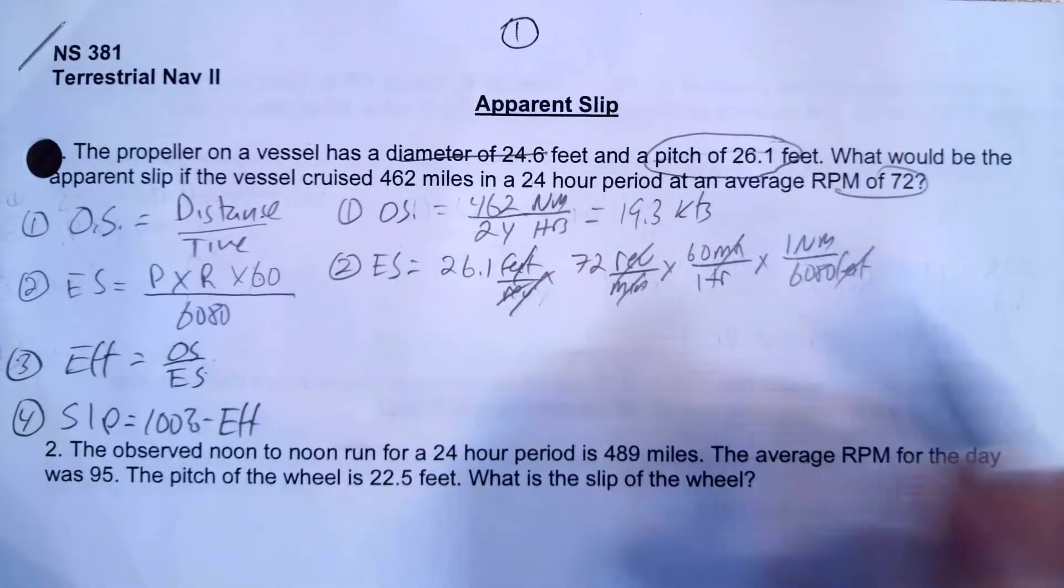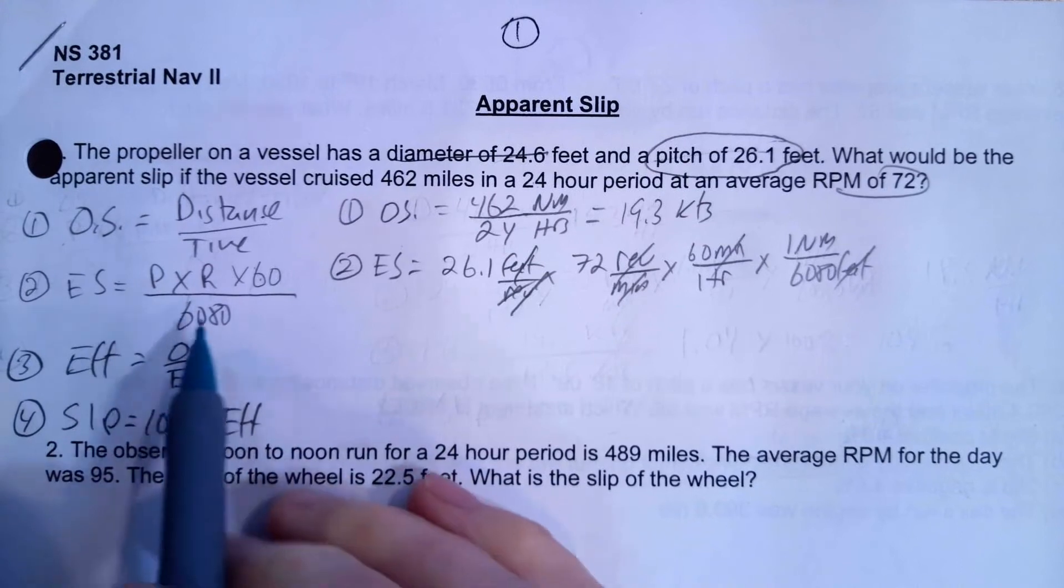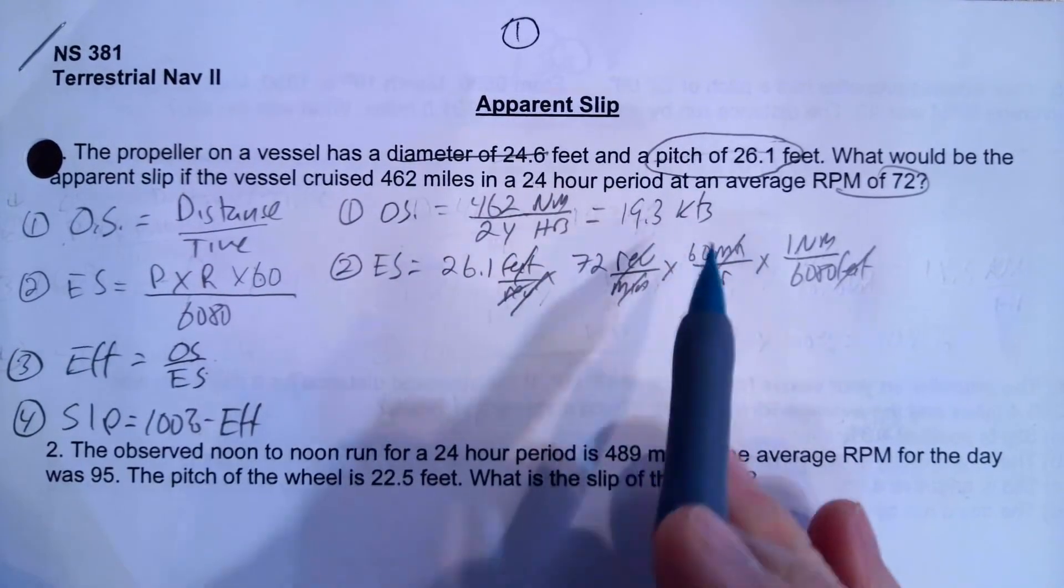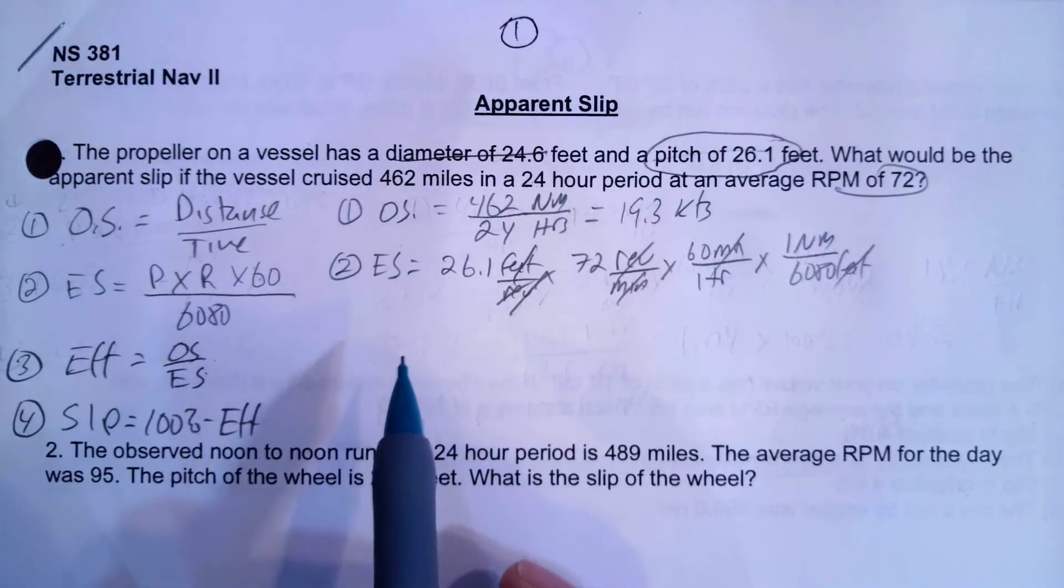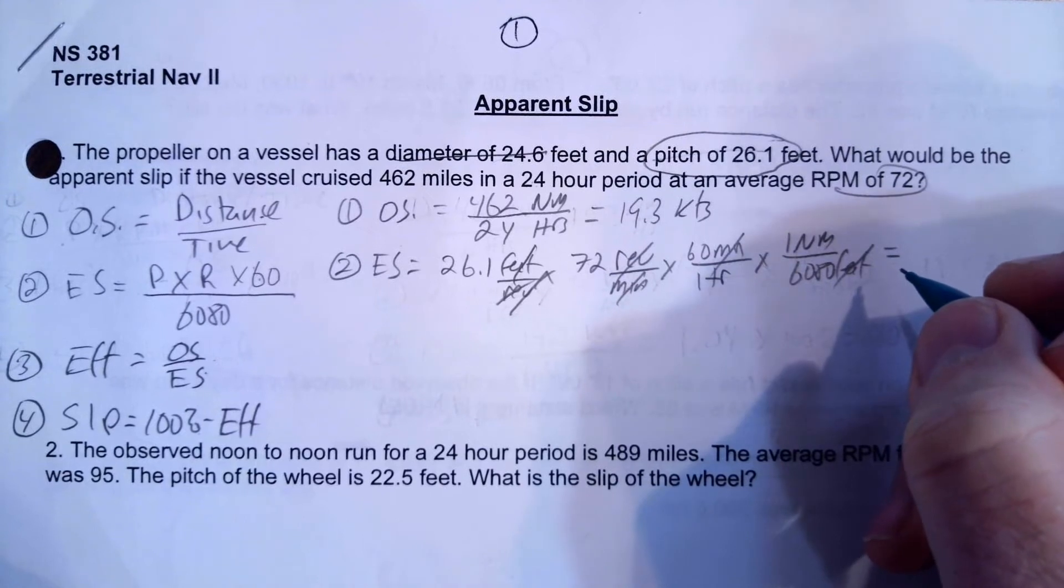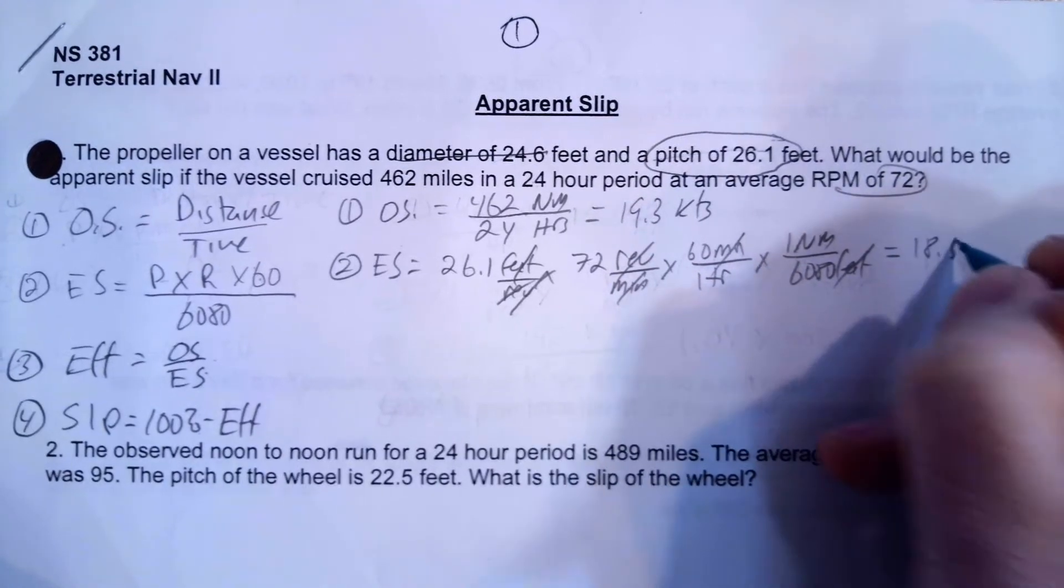And so now I've canceled everything out. I've essentially done this formula. So it's 26 times RPM times 60 divided by 6080. And when I do that, you should get 18.5.